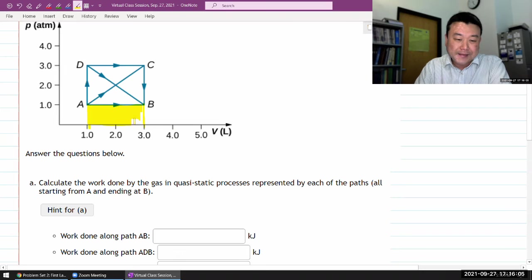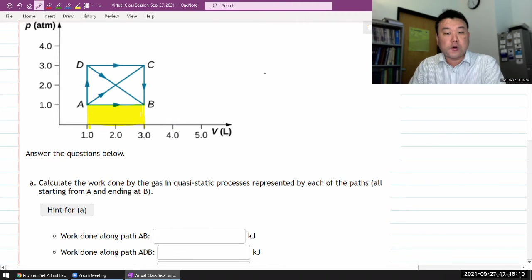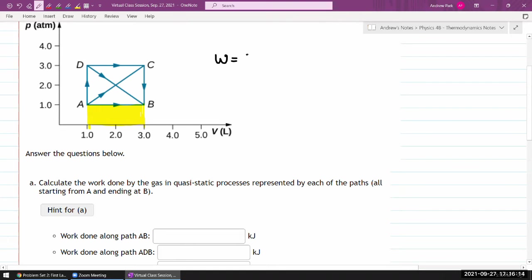And this comes naturally from our thermodynamic version of work done. So from mechanics, you remember work as force times displacement. And in the lecture, I've shown the derivation of how starting from this, you can, in terms of the thermodynamic quantities, express the infinitesimal work done as pressure times a small change in volume.